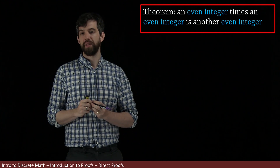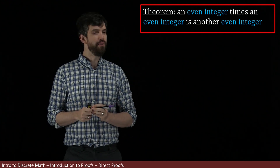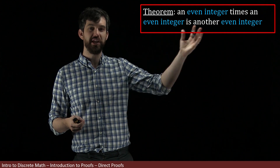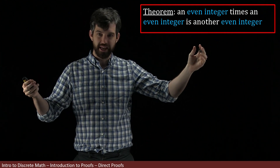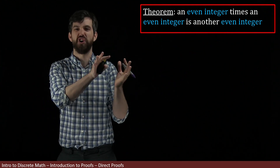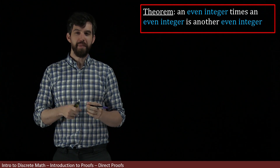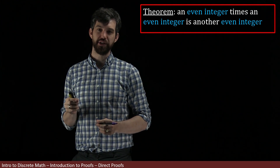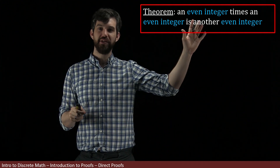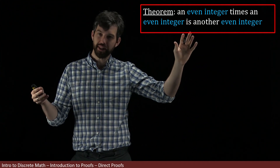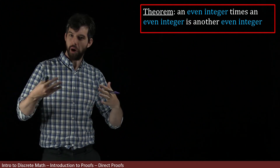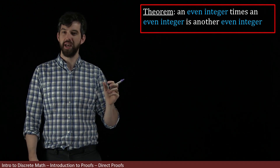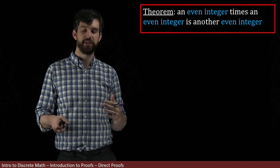Now step number one. I've got some theorem and notice that it's got a bunch of words in it — even integer, even integer, even integer. Those are the main things, as well as everything else as sort of filler and connective tissue. The main word that we need a definition for is the idea of an even integer. For more complicated theorems, focusing very precisely on what it means for each of these words is going to be an almost necessary first step.